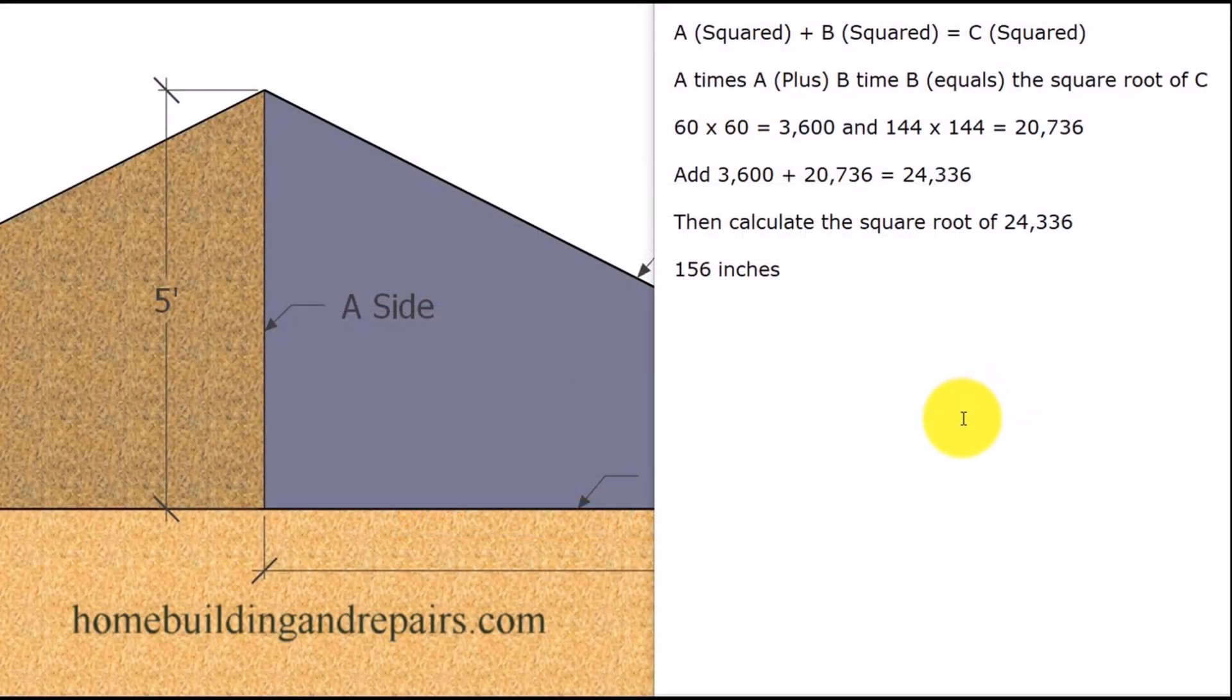In our last example, I wanted to throw out one more thing, and that is that you can use inches instead of feet. It might be easier for you, and it's easier for me to use inches instead of feet. So 5 foot converts into 60 inches. You're just going to multiply 60 times 60, A times A to get A squared, and just follow the same process through that I just showed you in the previous section.